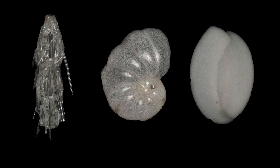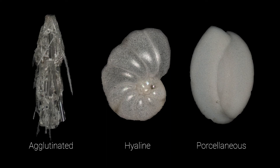Among benthic foraminifera, the first characteristic important for identifying major species groups is the material from which the foraminifera makes its shell. Agglutinated foraminifera embed sediment grains and the remains of other organisms into an organic matrix to make their shells. Both hyaline and porcellaneous foraminifera use carbonate to make their shells, but porcellaneous foraminifera have a smooth opaque shell whereas hyaline foraminifera are dotted with pores and often translucent. Just identifying these different shell types can help reconstruct the salinity of ancient bays and estuaries: porcellaneous foraminifera are most abundant in hypersaline environments, agglutinated foraminifera dominate brackish water environments, and hyaline foraminifera are most common in normal marine conditions.